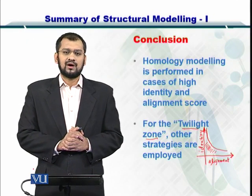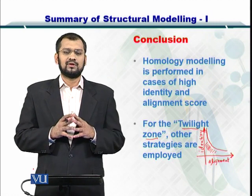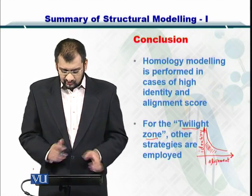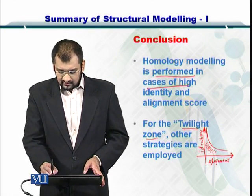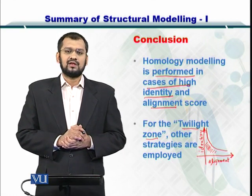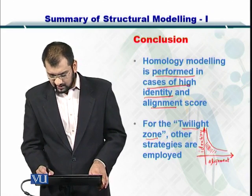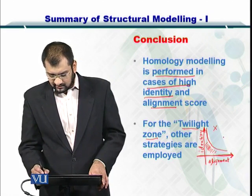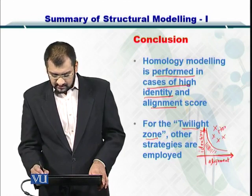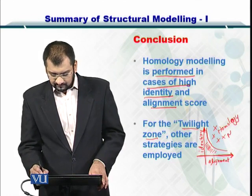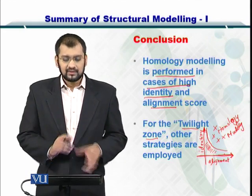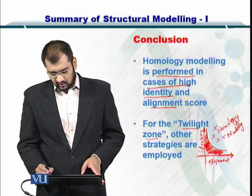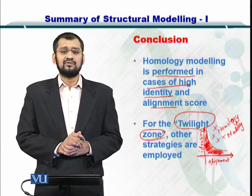In conclusion, homology modeling had seven steps and is one of the most important strategies for predicting protein structures from protein sequences. It is only performed in cases where you have high identity and alignment. As shown in the graph here, homology modeling is useful when both identity and alignment are high — this is the homology modeling area. For regions on the other side of the graph, which is called the twilight zone, other strategies will be discussed in later modules.